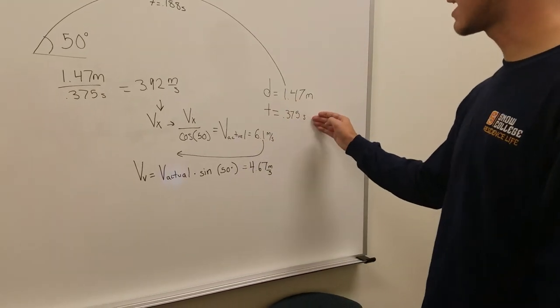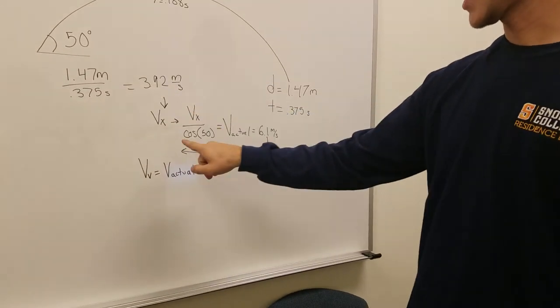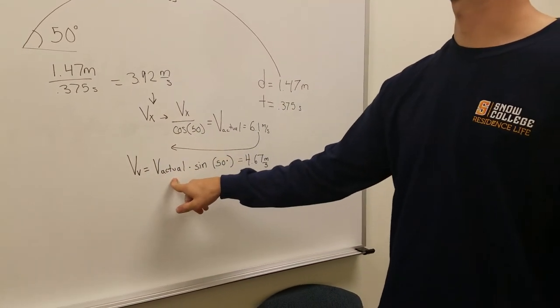Now we have almost all the components. We have our distance, our time traveled, our horizontal velocity, our vertical velocity, and our actual velocity.